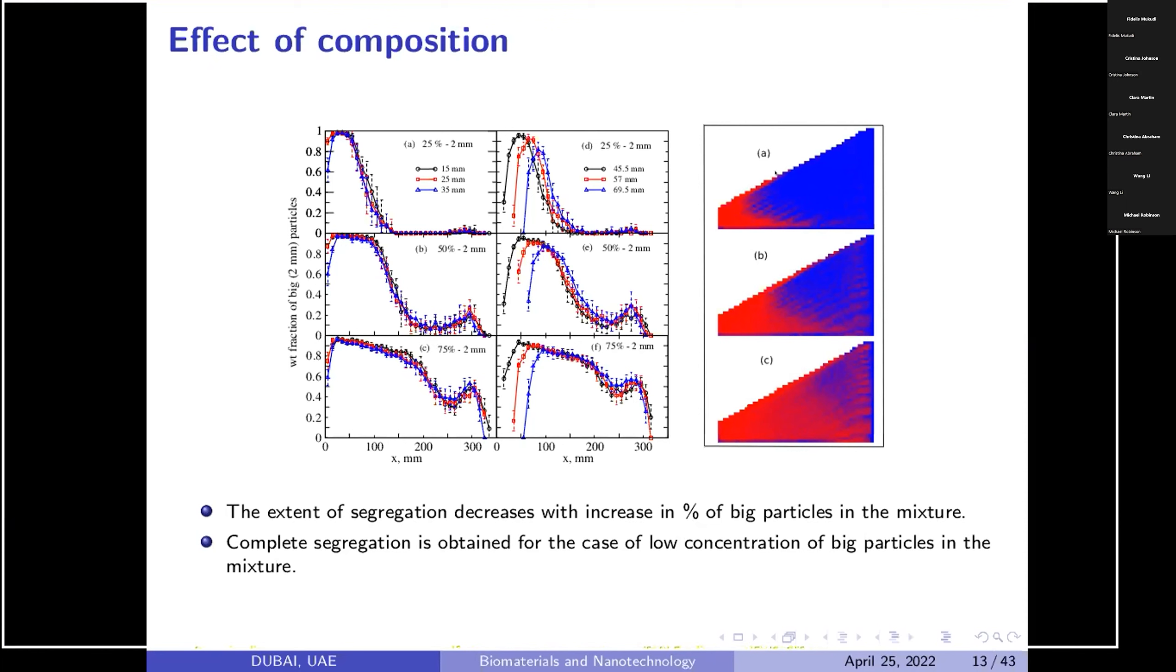When I have a mixture of 25% 2 mm particles and 75% 1 mm particles, in second case, I have 50% 2 mm, so obviously 50% 1 mm, and in third case, I have 75% 2 mm and 25% 1 mm. So when I change the composition from 25% of large particle to 75%, segregation patterns you can see changes a lot. We can say that in the first image, some stratification patterns has been observed, which is not observed over here. So extent of segregation decreases when I increase the percentage of big particles. Complete segregation is observed when the large particle percentage is less as compared to small particles.